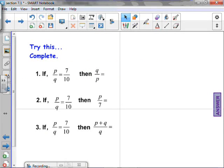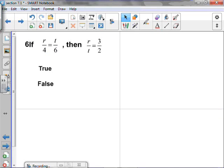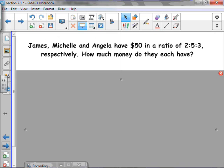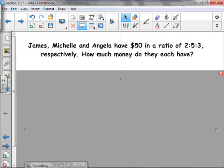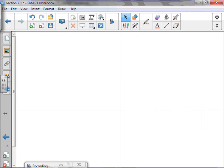Let's try this one. If P over Q equals 7 over 10, then Q over P equals, then P over 7 equals, and then P plus Q over Q equals. These are for you to do. As is that. And probably the rest of the slides. We've got. Yes.